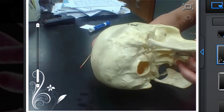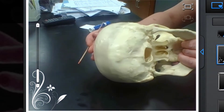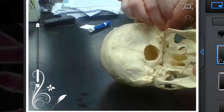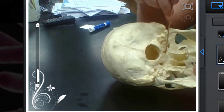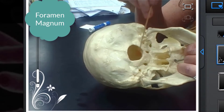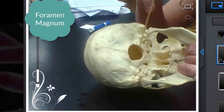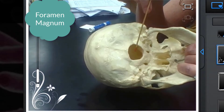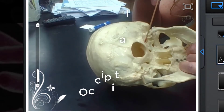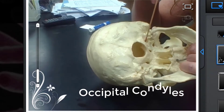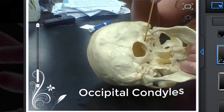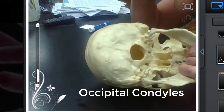Now let's look at some of the features on the underside. This large hole here — remember this is all occipital bone here — this large hole is the foramen magnum. This is where the spinal cord is going to enter through the skull and connect with the brain. There are two little bumps here called the occipital condyles, and these articulate with the C1 vertebra, which has the special name atlas. That creates the articulation point for the skull to be able to move around.